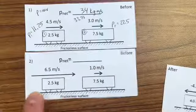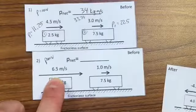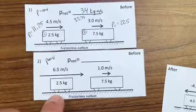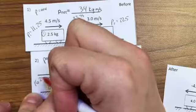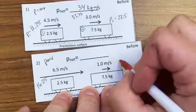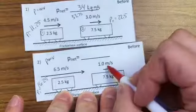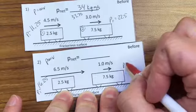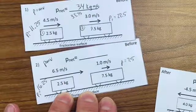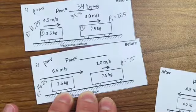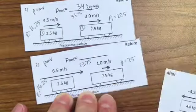So multiply mass times velocity, 6.5 times 2.5 gives us 16.25. And over here, mass times velocity, 1 times 7.5 gives me a momentum of 7.5. Add those together, 16.25 plus 7.5 gives us, calculator says 23.75. Significant figures,